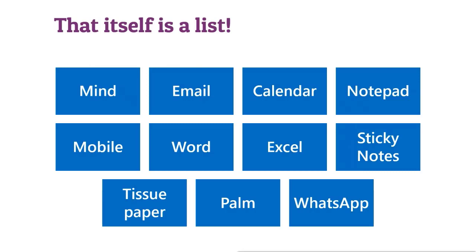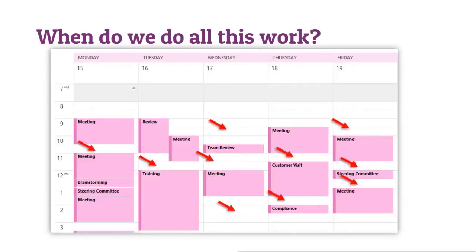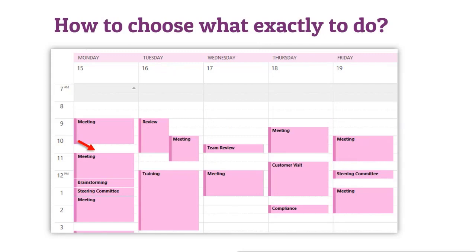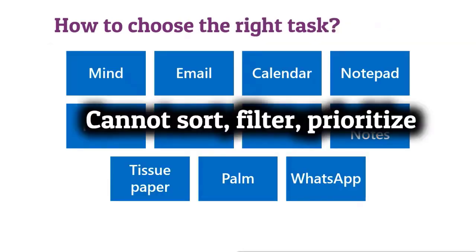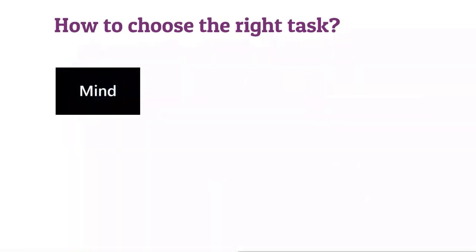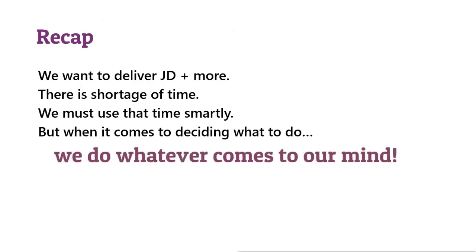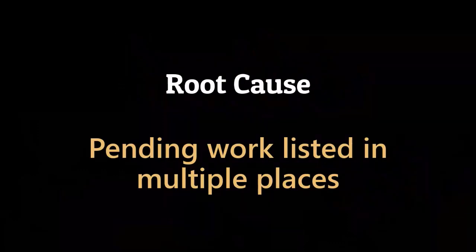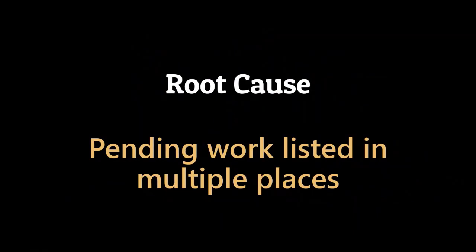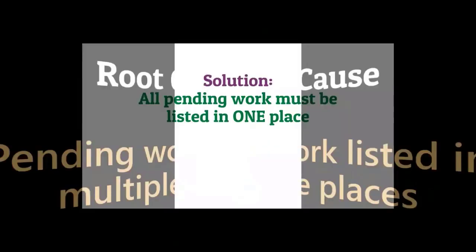In fact, the biggest chunk is in your mind. When do we actually get our work done? Between meetings. So I come out of a meeting, I have half an hour, and I want to decide what to do. I want to find the best use for that half an hour, but my task list is scattered. Because it's scattered, I can't sort, filter, or prioritize. So I go to the least common denominator I can access fastest, which is my mind. All talented, ambitious people with only one problem — shortage of time — end up doing whatever comes to mind. That is called inefficiency.